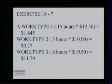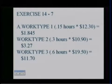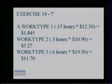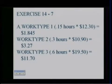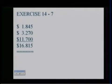Work type 1 takes 0.15 of an hour and costs $12.30 per hour, giving us $1.845 for that work type. Work type 2 takes 0.3 of an hour at $10.90, coming to $3.27 for that station. Work type 3 is 0.6 hours times $19.50 an hour, equaling $11.70. Adding those three numbers together, the total standard direct labor cost is $16.815 for each candle pedestal.